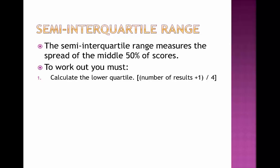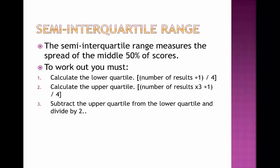The first one is to calculate something we call the lower quartile and this is getting the number of results, adding one to it, and dividing it by four. Next up we have to calculate the upper quartile which is the exact same calculation, but instead we multiply the number of results by three before we add the one to it and then divide by four. And then finally we subtract the upper quartile from the lower quartile and divide by two which should then give us our answer.